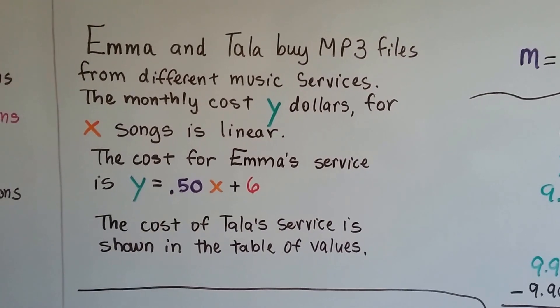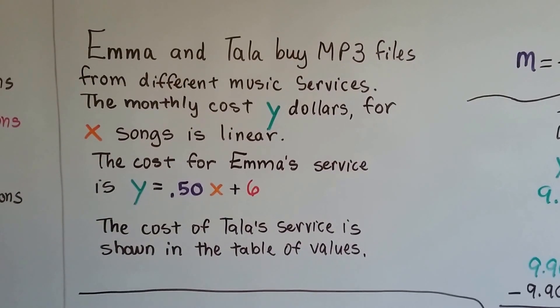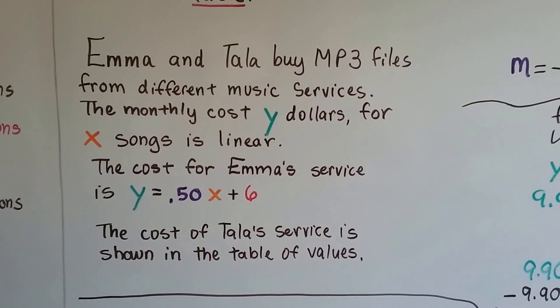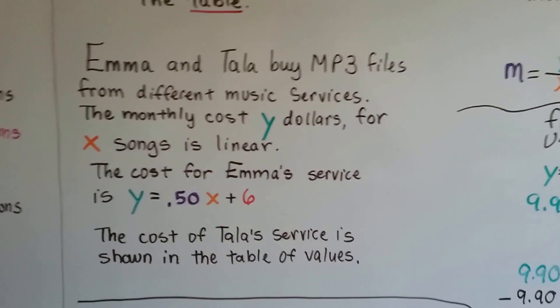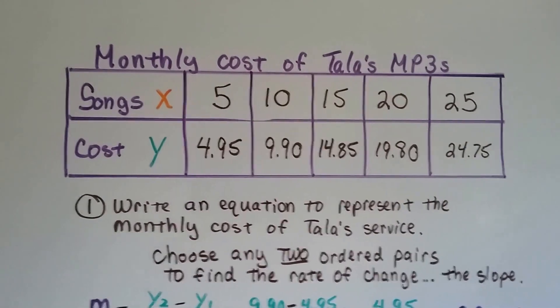The cost for Emma's service is y equals .50x plus 6 dollars. The cost of Tala's service is shown in the table of values. This is Tala's service.